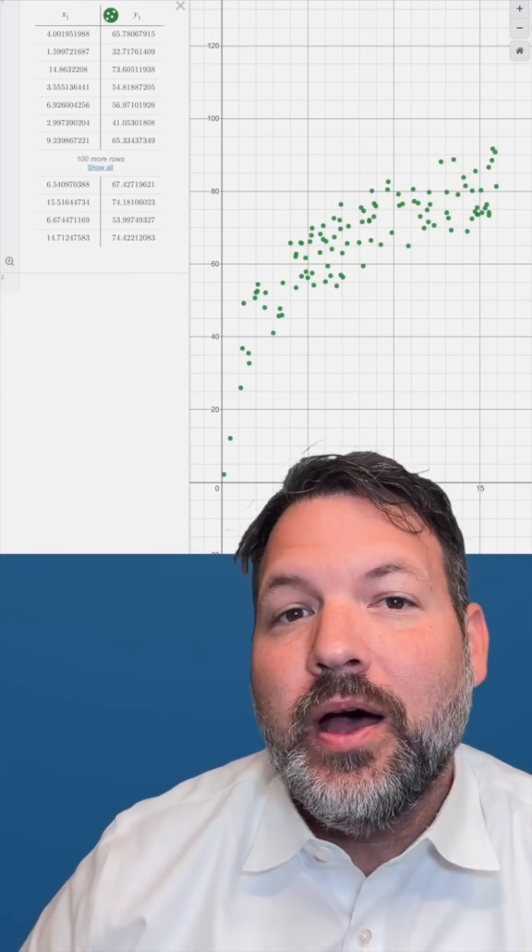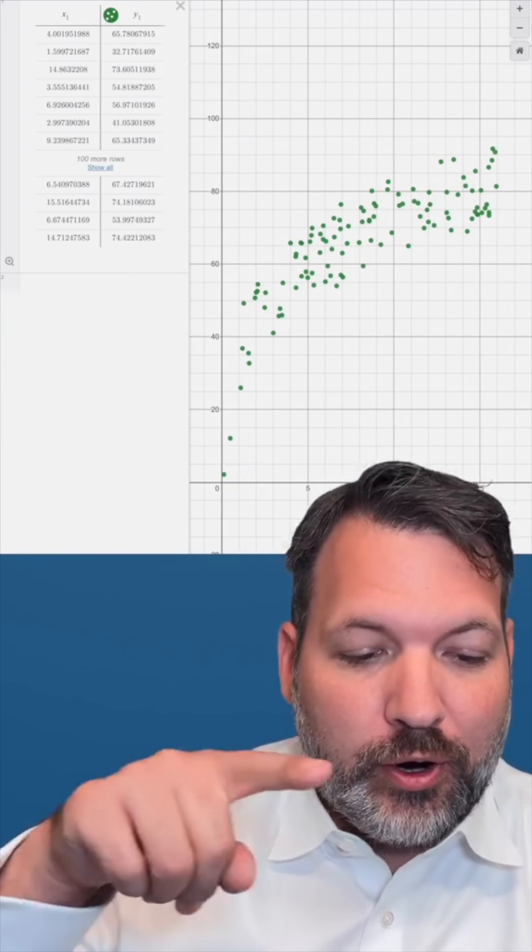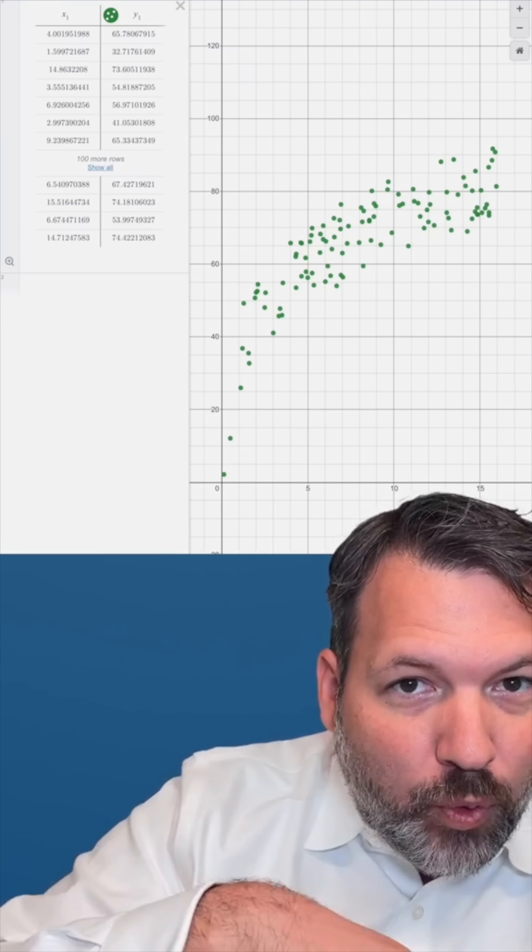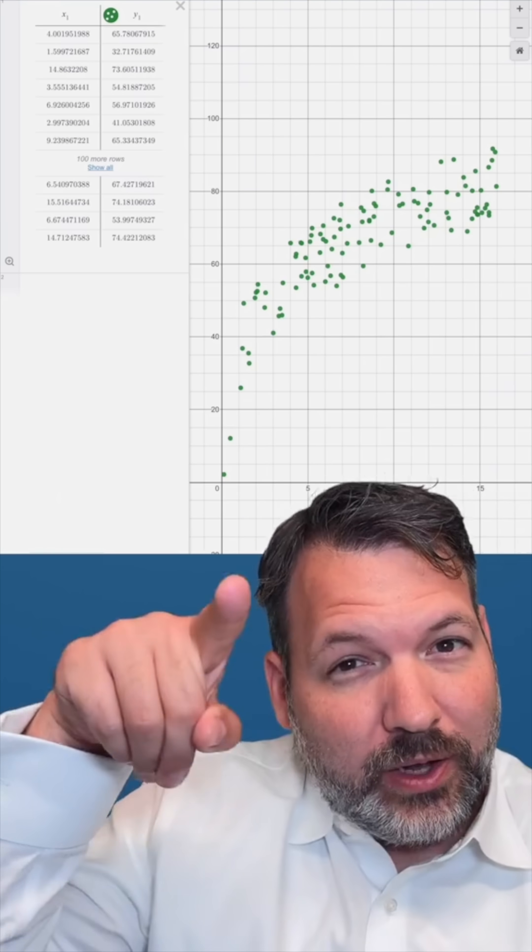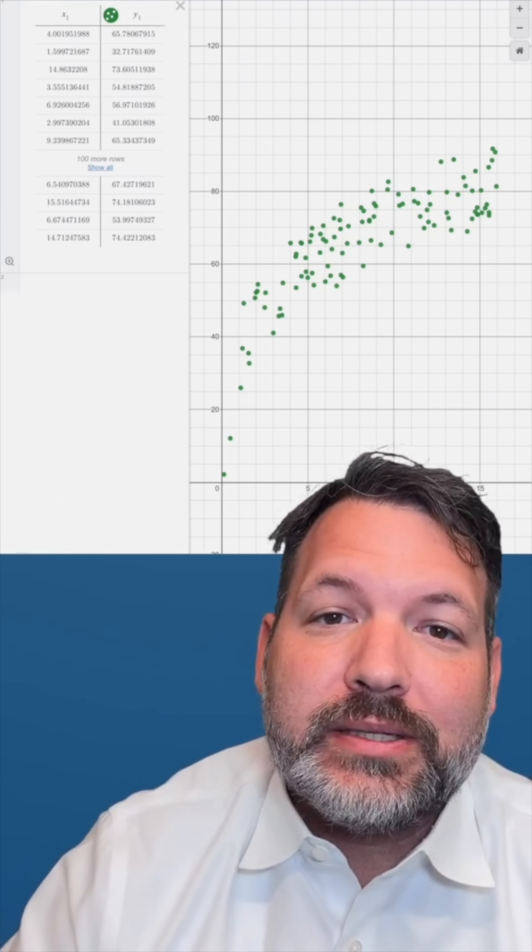Then you can start to see the shape of that familiar logarithmic curve coming from the negative y-axis, increasing relatively quickly at first, and then flattening out as it moves to the right.